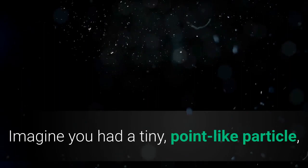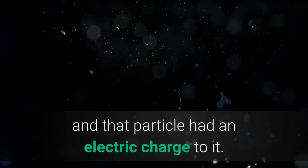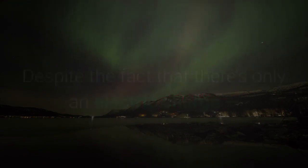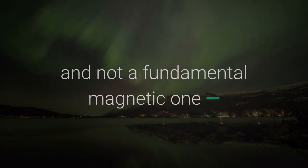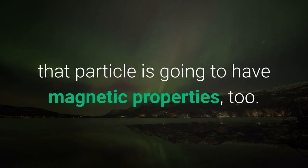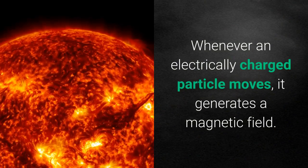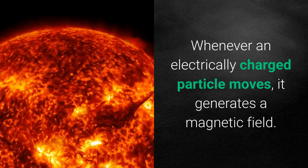Imagine you had a tiny, point-like particle, and that particle had an electric charge to it. Despite the fact that there's only an electric charge, and not a fundamental magnetic one, that particle is going to have magnetic properties, too. Whenever an electrically charged particle moves, it generates a magnetic field.